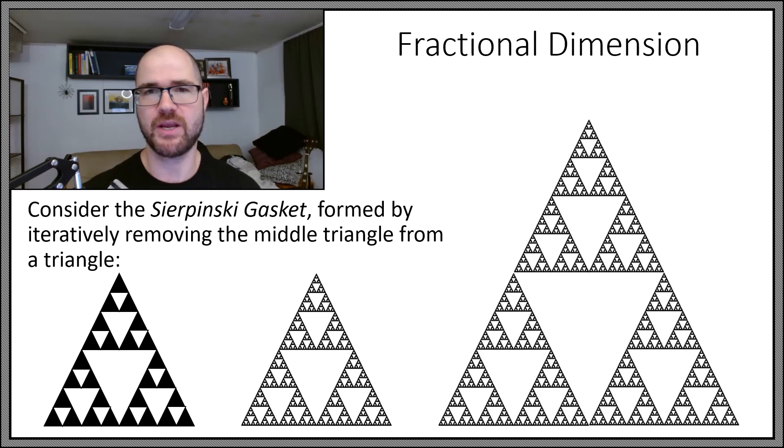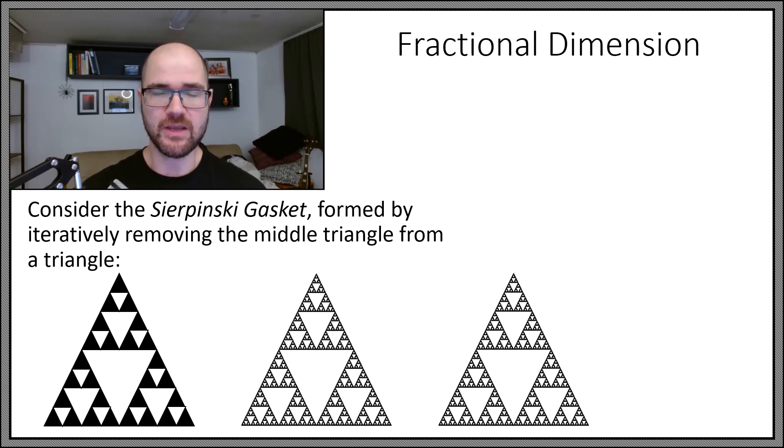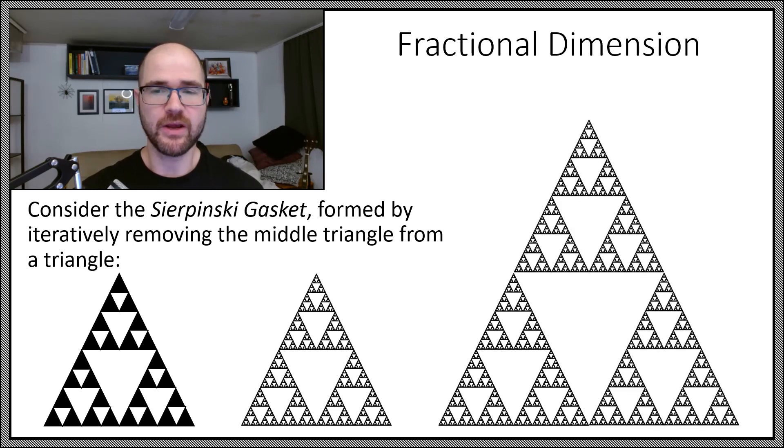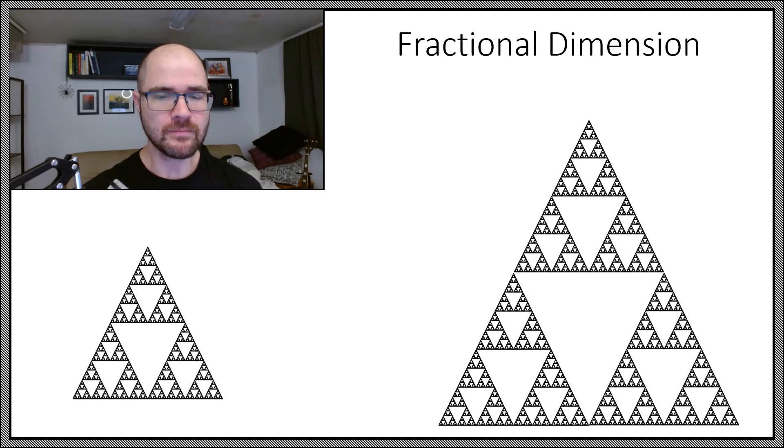But here's the same shape twice as large in every direction. It is twice as wide, it is twice as high. But it is also now a triangle formed by removing the middles over and over and over. But I scaled everything by a factor of two, and I got more or less the same shape. But it's made of three copies of the original. Here's one, a second, and a third. So doubling the size of this object meant there were exactly three copies of the original.